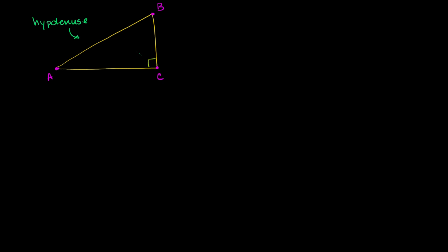Let's say the length of AC is lowercase a, and the length of BC is lowercase b. I'll use uppercases for points and lowercases for lengths. Let's call the length of the hypotenuse AB lowercase c. To prove a relationship between a, b, and c, I'm going to construct a segment between C and the hypotenuse, constructed so that they intersect at a right angle.